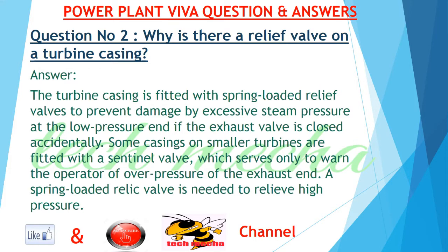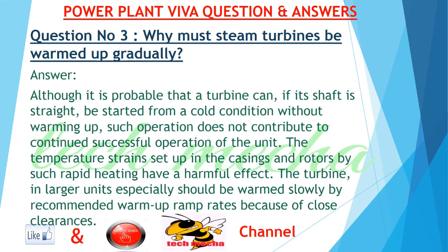Question number 2: Why is there a relief valve on a turbine casing? Answer: The turbine casing is fitted with spring-loaded relief valves to prevent damage by excessive steam pressure at the low pressure end, if the exhaust valve is closed accidentally. Some casings on smaller turbines are fitted with a sentinel valve, which serves only to warn the operator of overpressure at the exhaust end. A spring-loaded relief valve is needed to relieve high pressure.